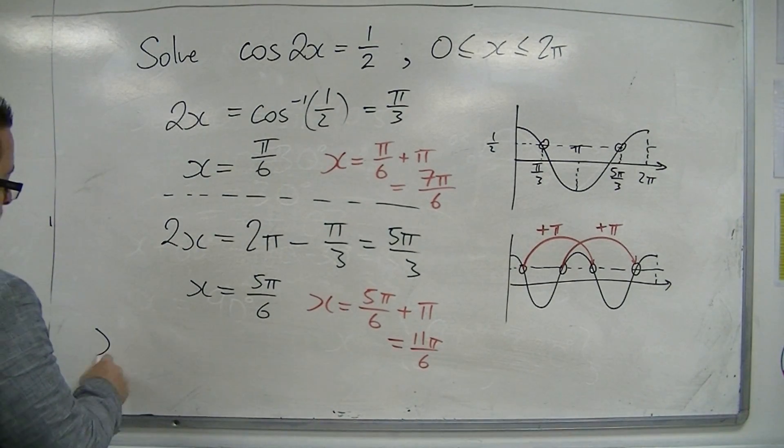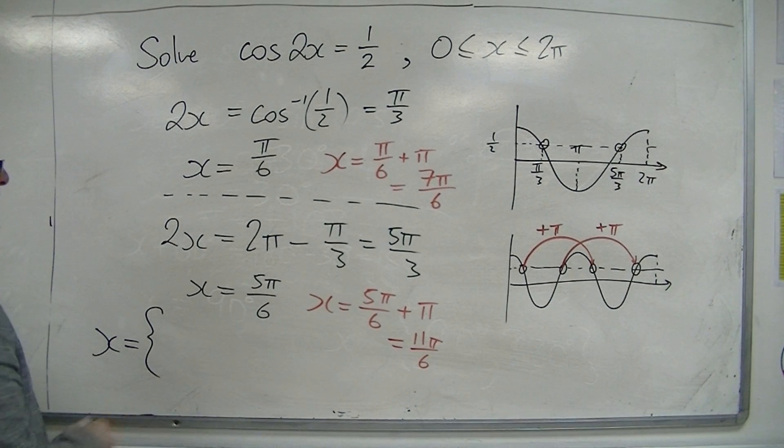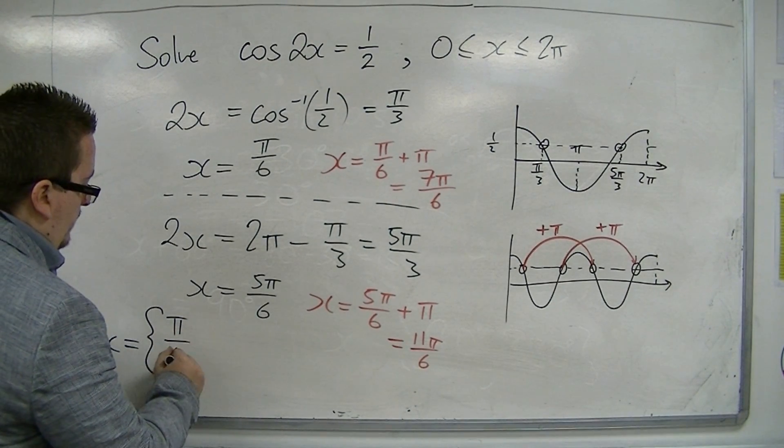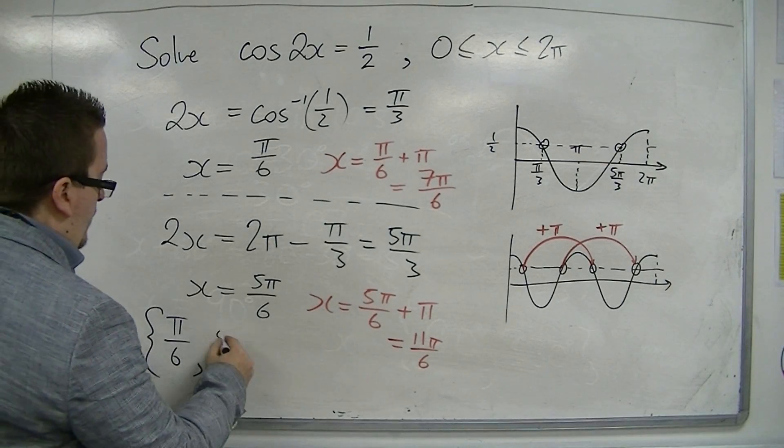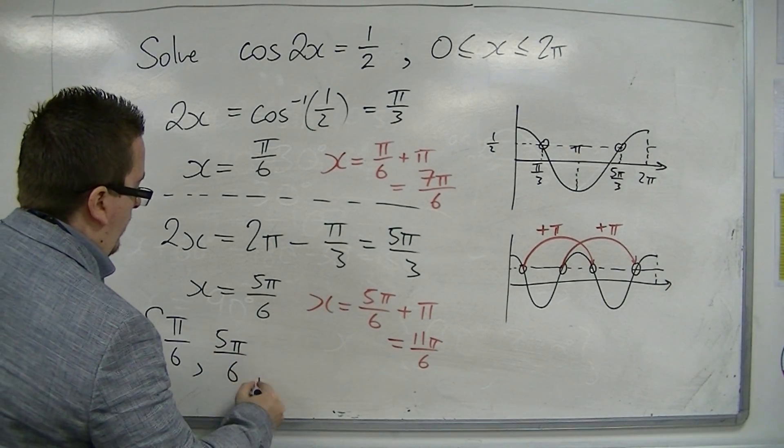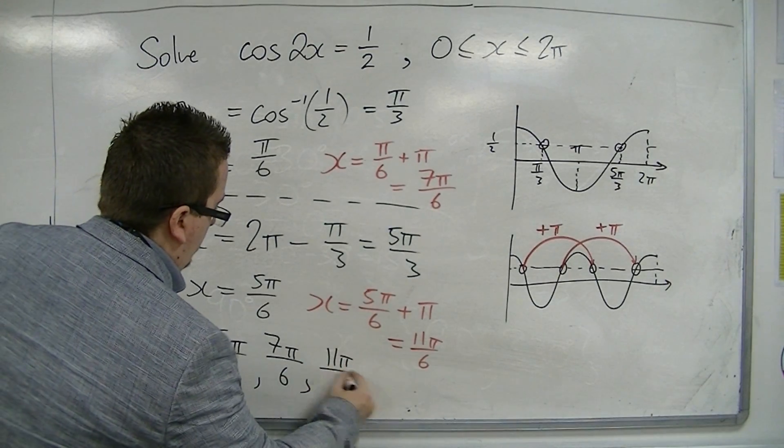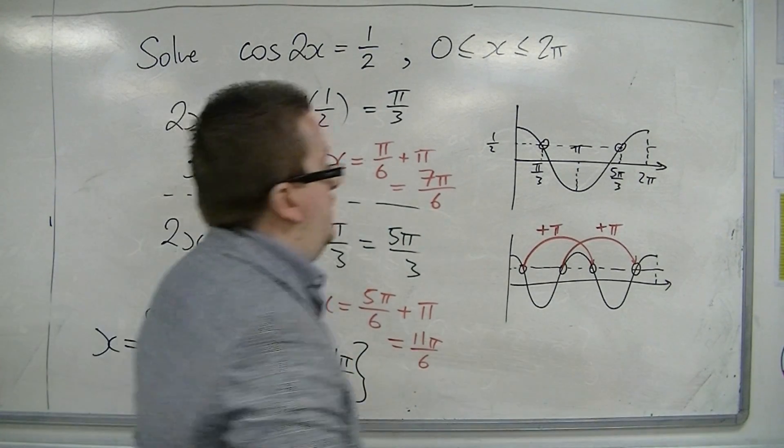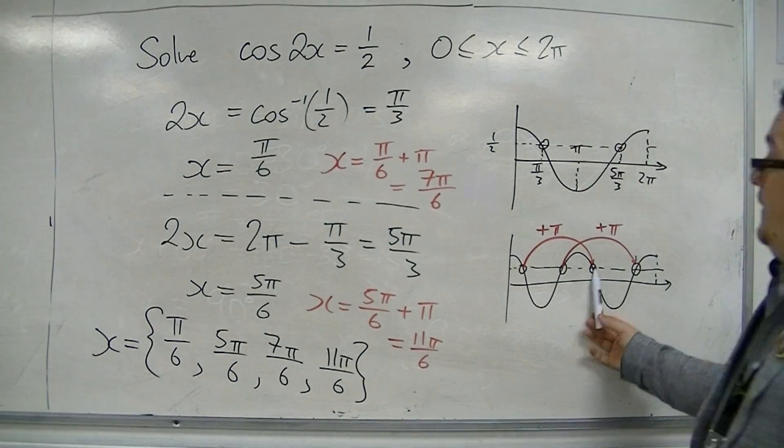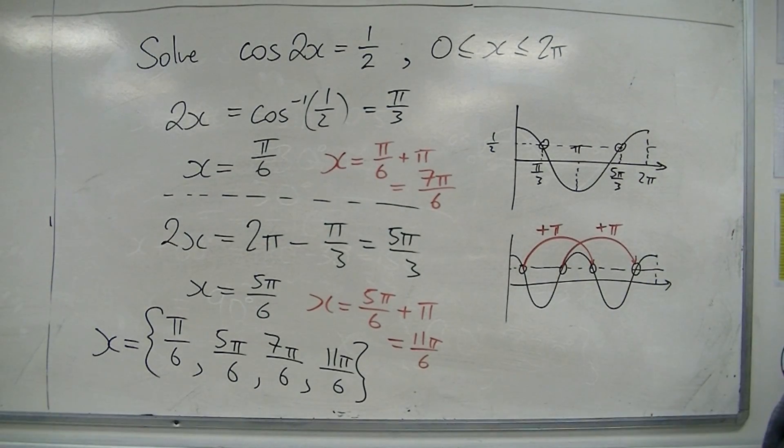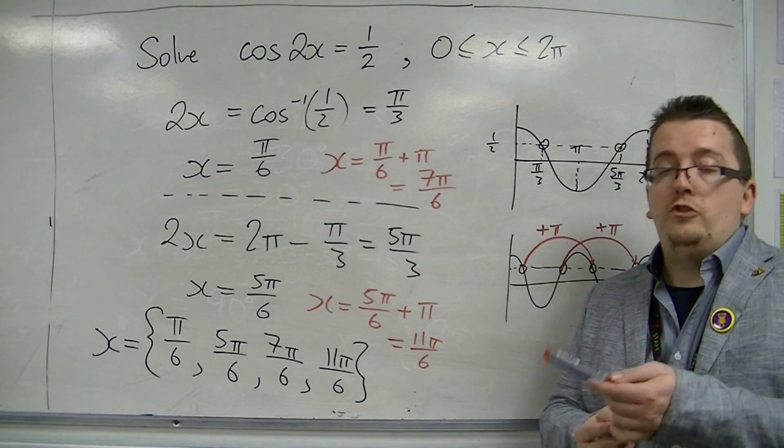So in actual fact, we have 4 solutions that can go in a curly bracket. We've got pi over 6, we've got 5 pi over 6, 7 pi over 6, and 11 pi over 6. So the 7 pi over 6 is there, and the 11 pi over 6 is there. And that's how we can find the 4 solutions that we need.